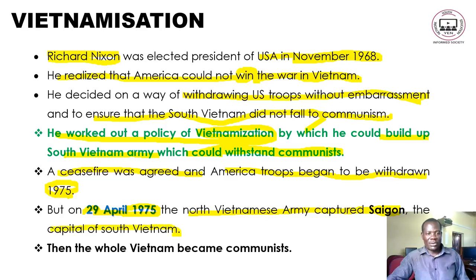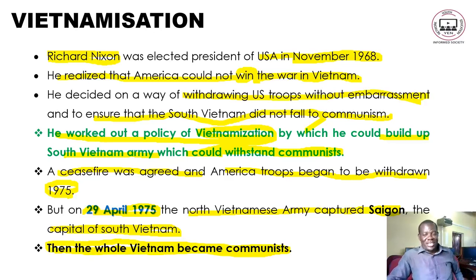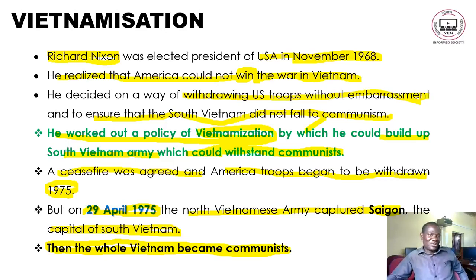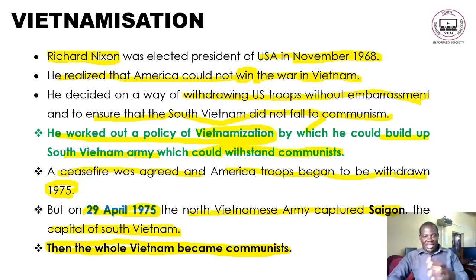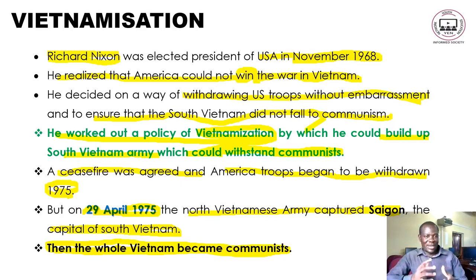On 29th April 1975, the North Vietnamese army captured Saigon, the capital of South Vietnam, and the whole of Vietnam became a communist state. The Americans withdrew and communism won in Vietnam. Although movies often depict the Vietnamese losing, in reality the Americans were embarrassed — they withdrew, and Vietnamization did not work. The end result was that communism took over the whole of Vietnam.